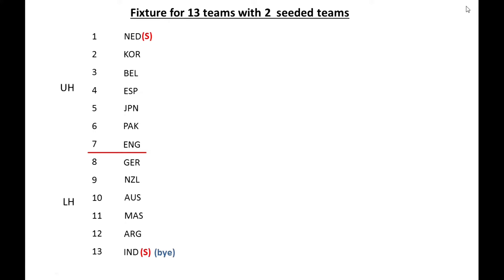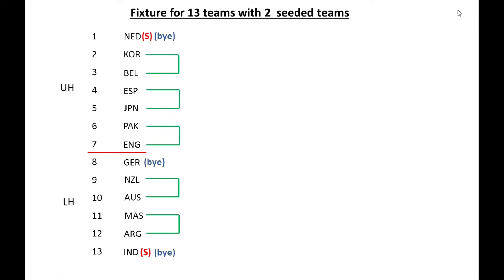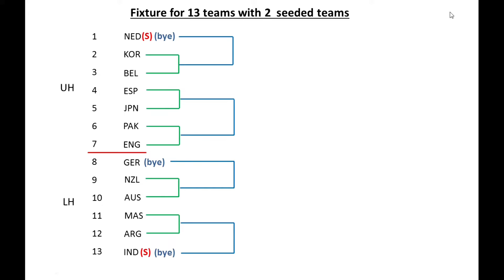We have three byes: the first bye is given to the lower half last team, the second bye is given to the upper half first team, and the third bye is given to the lower half first team. These are the only three byes given. These are the first round matches, and this one is the second round matches.